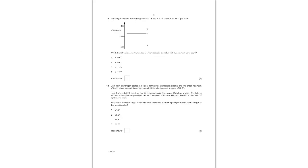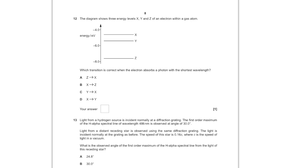For question number twelve, we are given three energy levels X, Y, and Z of an electron within a gas atom. Which transition occurs when the electron absorbs a photon with the shortest wavelength? When absorbing it will jump up. The energy of a photon is hc over lambda, so the shortest wavelength corresponds to the greatest energy. The largest energy transition is from Z to X, as that gap is the highest. So A is the answer.